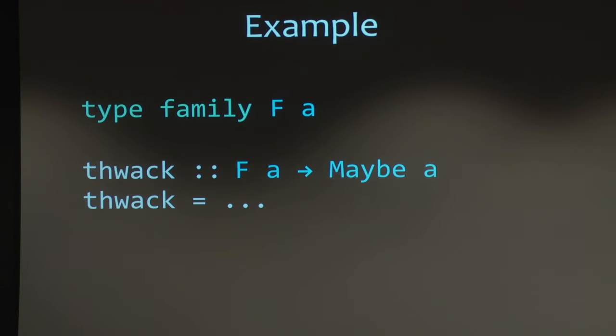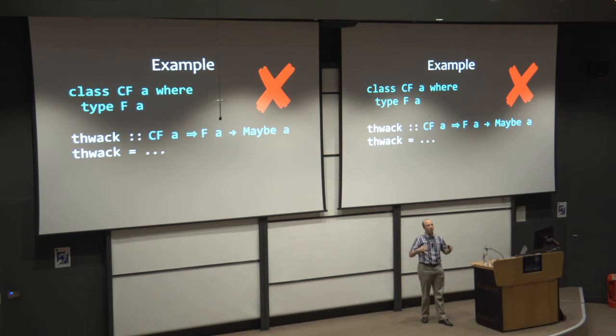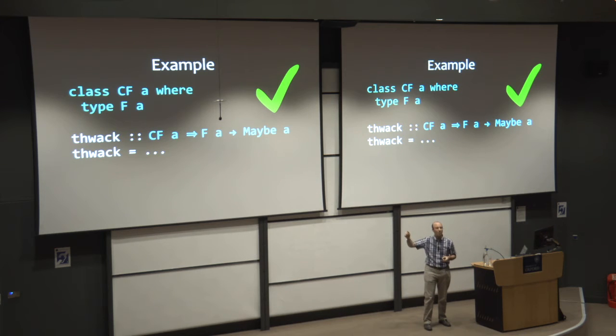So let's look at an example. So here, I have some type family f. It might have instances. It doesn't really matter. And say I want to thwack an f to a maybe a. So today, this is accepted, but tomorrow, with constrained type families, this would be rejected because it violates these rules on the previous slide. And so instead, we would need to have a class cf that would enclose f. cf is the class for f. And so now it's associated. And then we have to take that class constraint and put it on our type signature for thwack. And so now we can only use f when we have that class constraint around. And so this would be accepted under the constrained type families scheme.